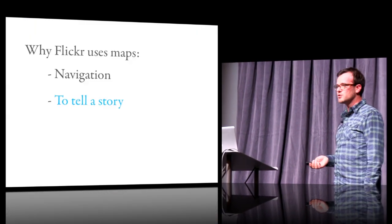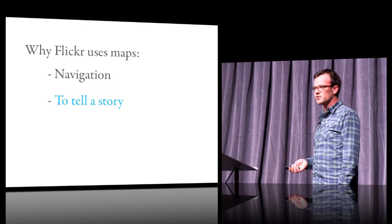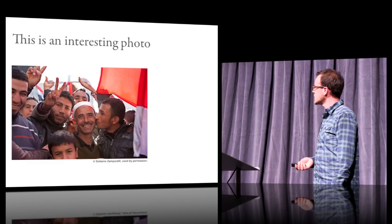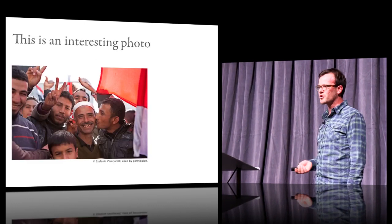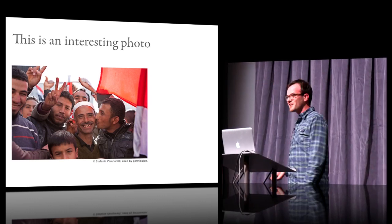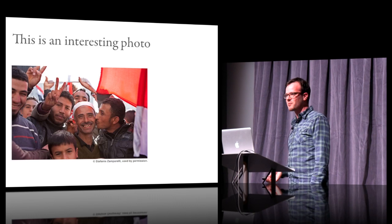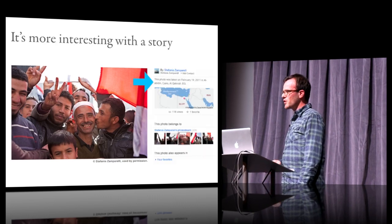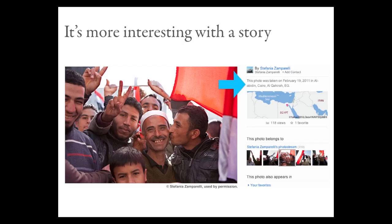Another reason that we use maps on Flickr is to tell a story. If you came across this photo on Flickr, you would think that it's a nice photo and wonder what it's all about. But on our photo page that we've recently redesigned, you can see that this was taken in Cairo on February 19th, which means it's part of the Egyptian revolution — it makes it a little bit more interesting. You don't have to dig into this photo too much; you can see exactly what it's about pretty quickly.